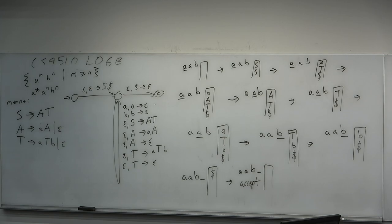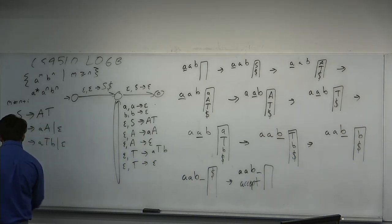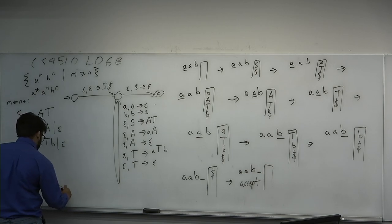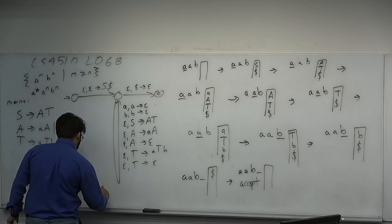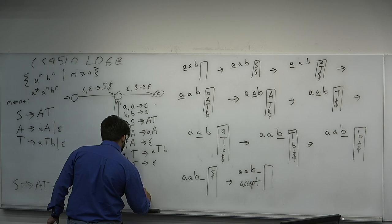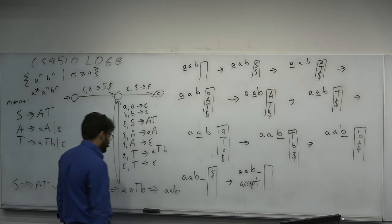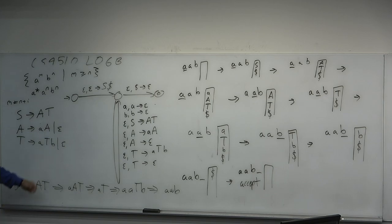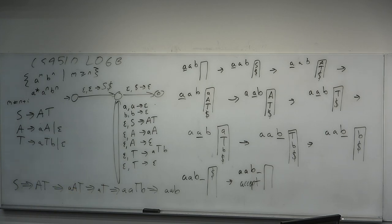This PDA accepts the string AAB. The steps of the PDA correctly simulate the exact working productions of the grammar. The derivation is: S ⇒ AT ⇒ aAT ⇒ AT ⇒ ATB ⇒ AAB. The PDA always simulates the leftmost derivation because that's what's at the top of the stack — it chooses the first non-terminal to produce. Even though there are multiple production orders, they all lead to the same strings.